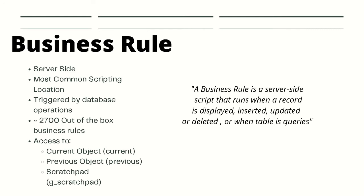Business rules are JavaScript that runs on the server. In today's world we might think of Node.js, however ServiceNow actually uses Mozilla Rhino, which is a JavaScript runtime written in Java. Since ServiceNow's source code is written in Java, business rules are triggered by database operations — insert, update, delete, or query. Out of the box there are over 2,700 business rules present, so they are commonly used throughout the system.